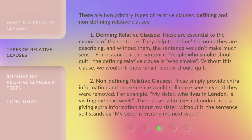There are two primary types of relative clauses: defining and non-defining relative clauses. Defining relative clauses are essential to the meaning of the sentence. They help to define the noun they are describing, and without them, the sentence wouldn't make much sense. For instance, in the sentence 'People who smoke should quit,' the defining relative clause is 'who smoke.' Without this clause, we wouldn't know which people should quit.